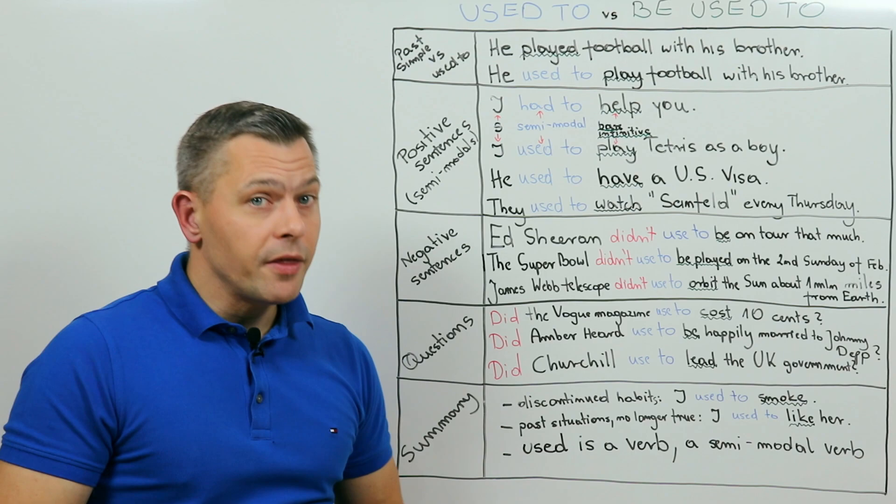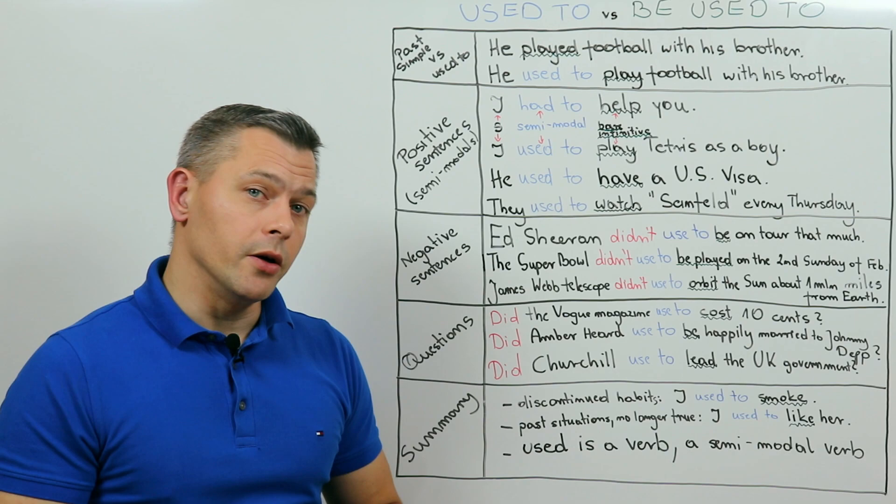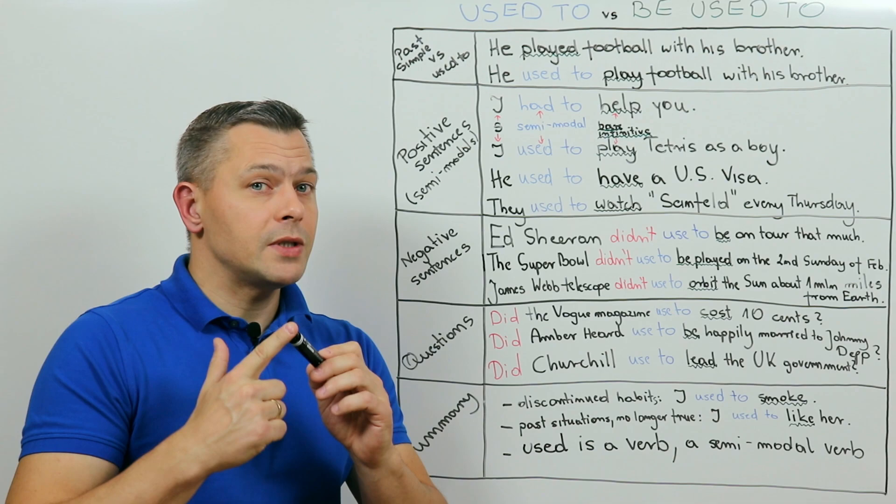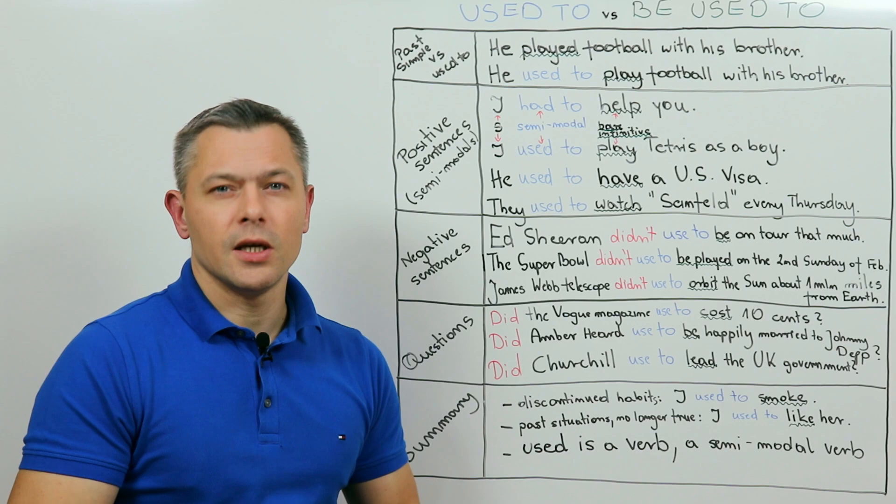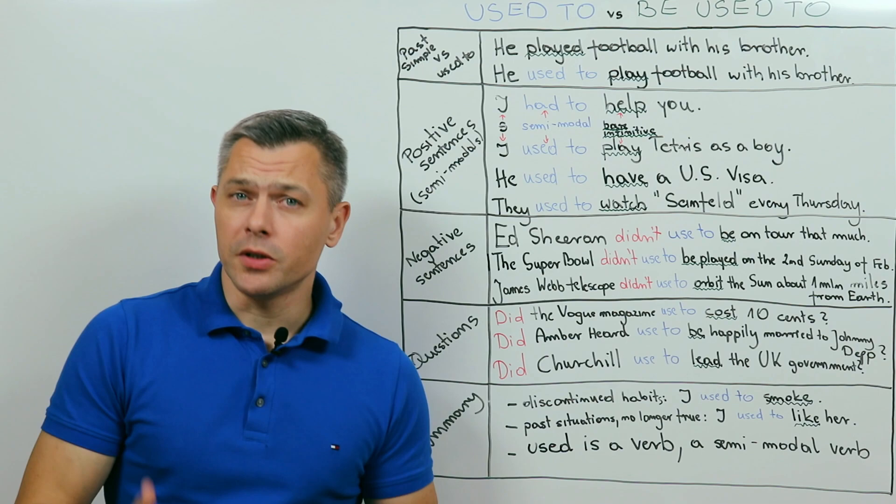So let's start with used to, which I think is the more common and the less complex one. This structure has some similarities with the past simple tense. They both talk about the past, they both talk about states and actions, they both need a verb in its past form and auxiliary did to form negatives and questions. And they both talk about past habits and things that were true sometime in the past. And that would be all as far as the similarities are concerned.